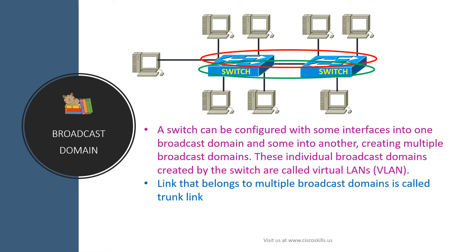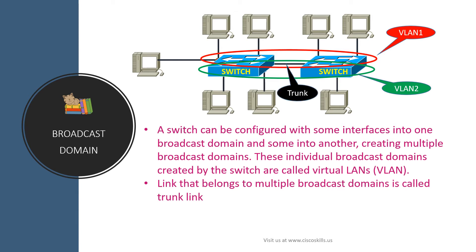A switch can be configured with some interfaces in one broadcast domain and some in another, creating multiple broadcast domains. These individual broadcast domains created by the switch are called VLANs. In this network we have VLAN 1 and VLAN 2. A link that belongs to multiple broadcast domains is called a trunk link, and in this network this link is a trunk link.